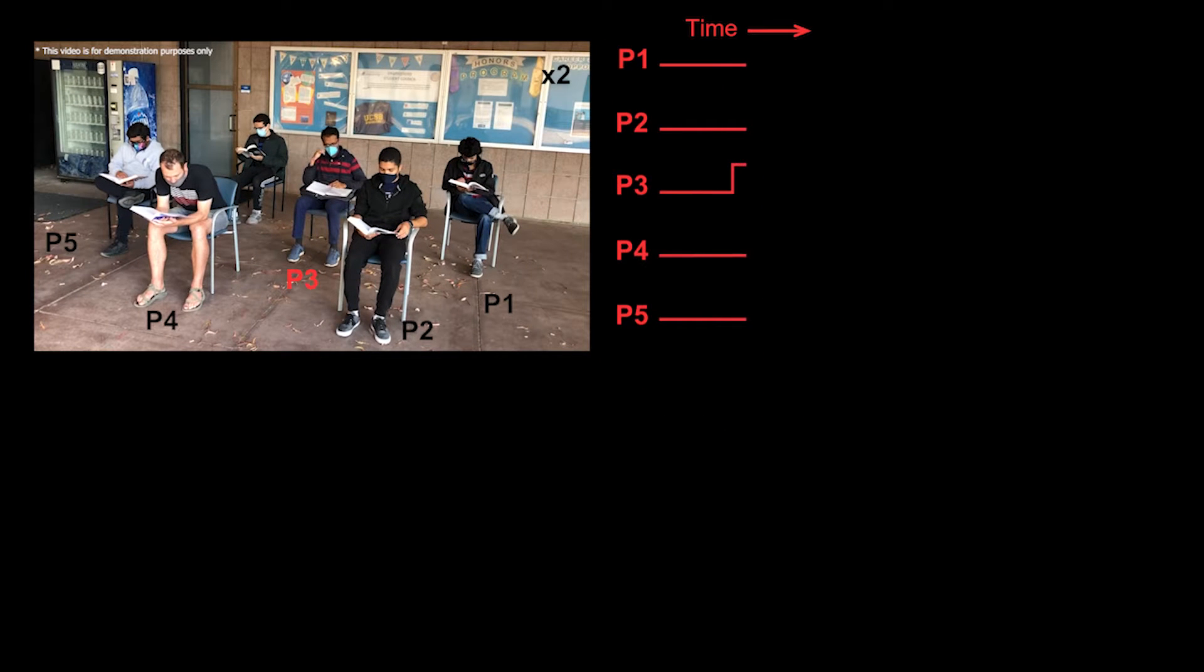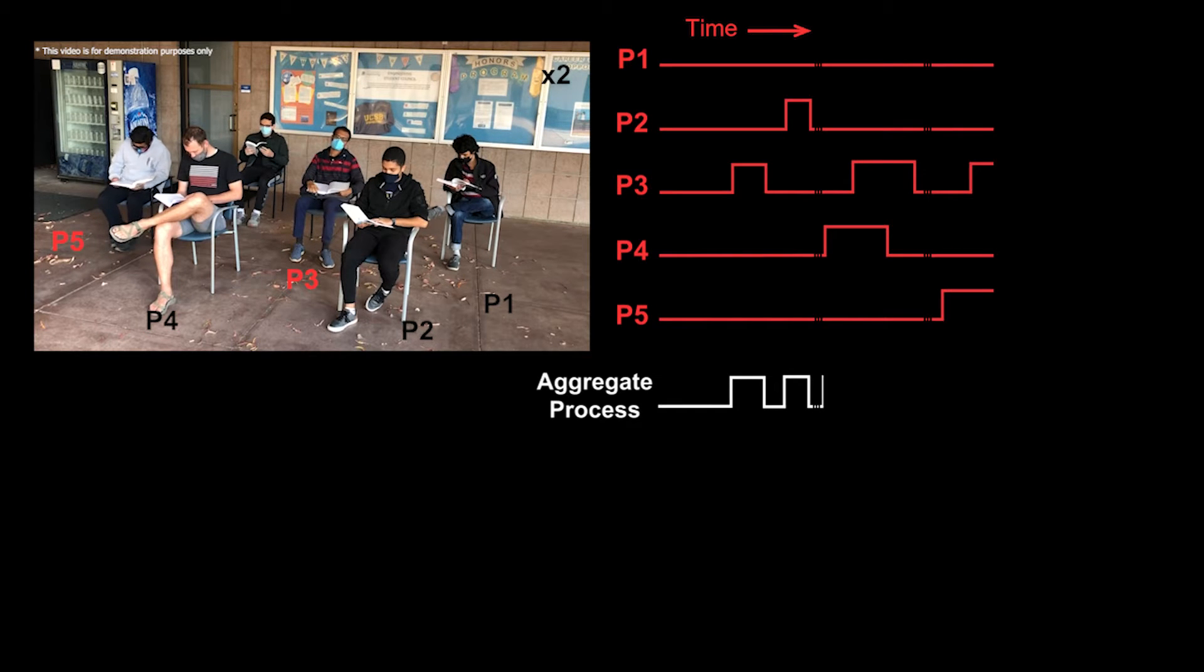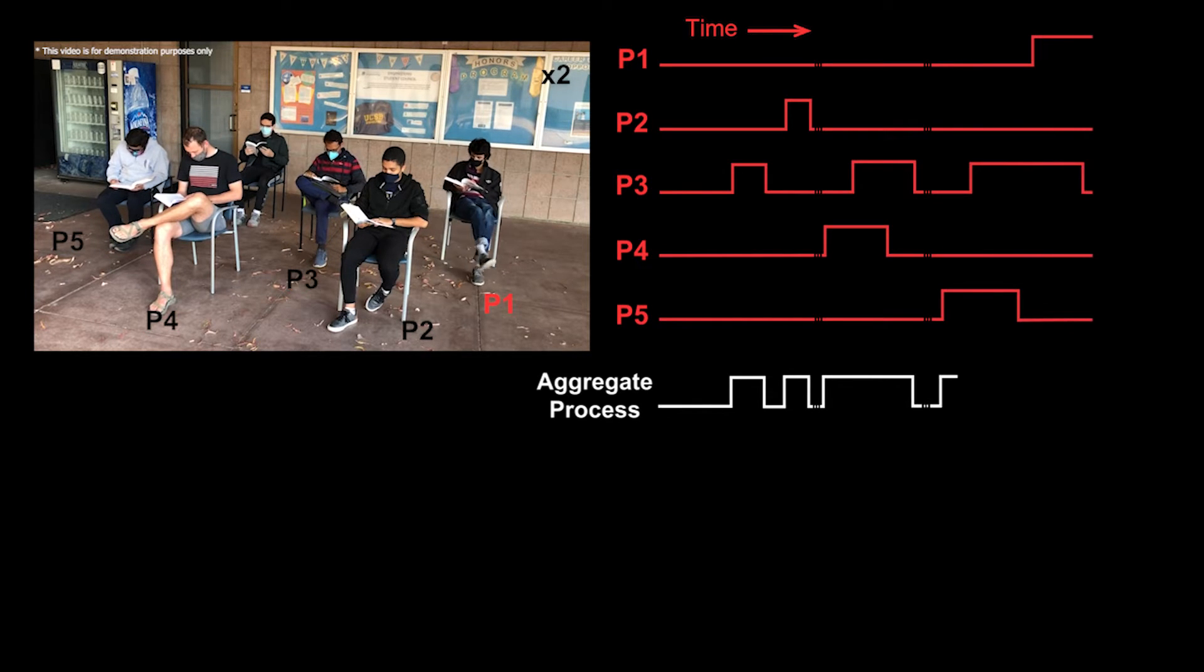As an example for this crowd, we can see their individual fidget sequences as a function of time on the right. We can also see the aggregate fidget process that results from the superposition of the individual fidget sequences.